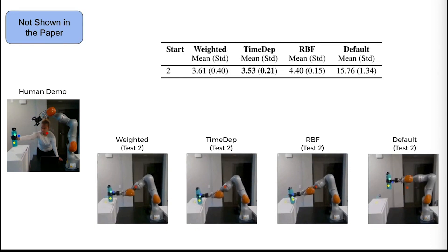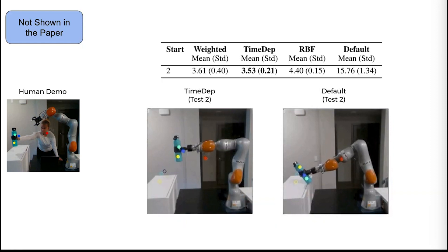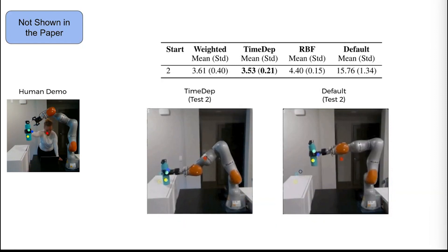All the learned costs perform similarly and much better than the default cost for test case 2. We show a side-by-side comparison of the trajectory optimized using the time-dependent and the default cost to illustrate this difference.